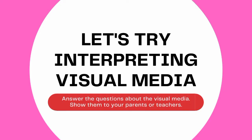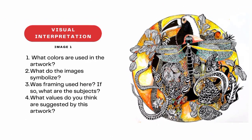And now, let's try interpreting visual media. Answer the questions about the visual media and show them to your parents or teachers. Are you ready? Let's look at image number one. What colors are used in the artwork? What do the images symbolize? Was framing used here? If so, what are the subjects? What values do you think are suggested by this artwork?